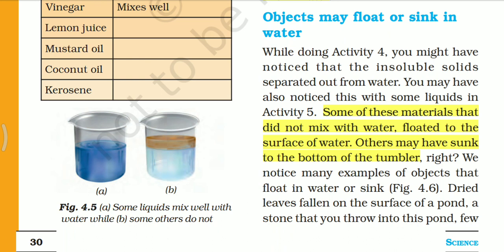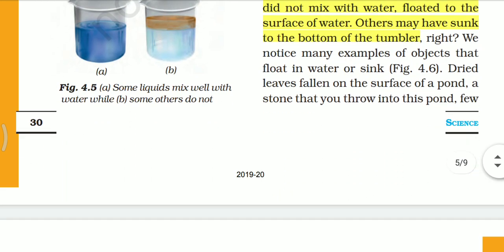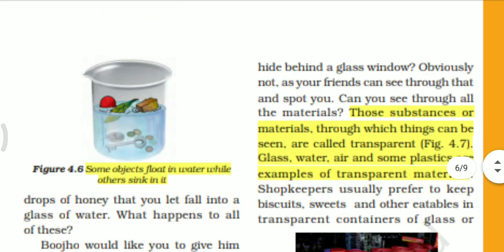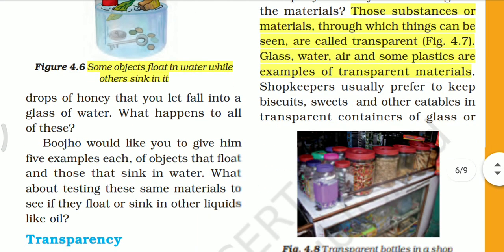We notice many examples of objects that float in water or sink. As you can see in Figure 4.6: dried leaves fallen on the surface of a pond, a stone that you throw into the pond, and a few drops of honey that you let fall into a glass of water.